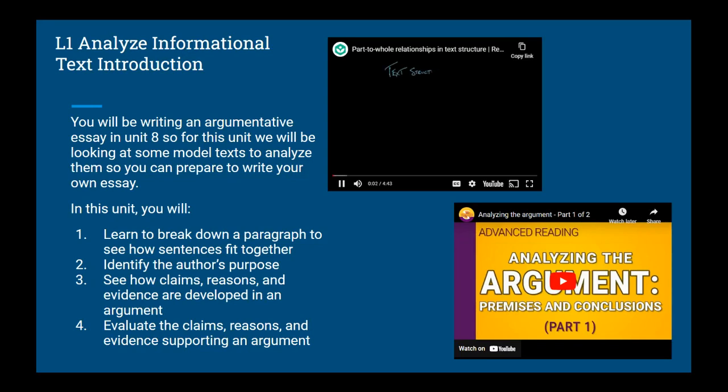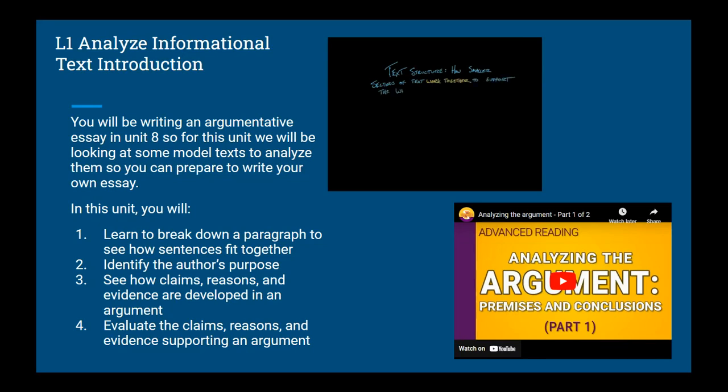Today we're going to be talking about how smaller sections of text work together to support the whole text. But first, let us consider Voltron. It is a giant robot made up of five smaller robots, each one piloted by a person — five friends, each with control over a different part of the robot's body. In order to walk or pick up objects or fight space monsters the size of battleships, all the disparate parts of the robot have to function together.